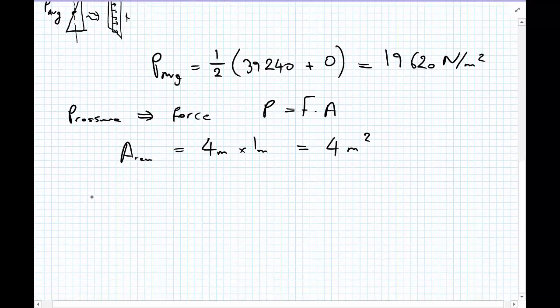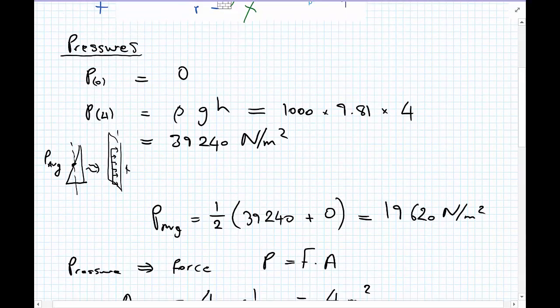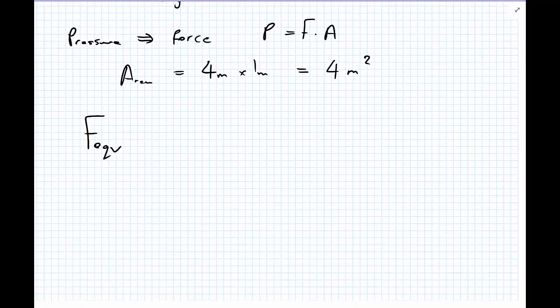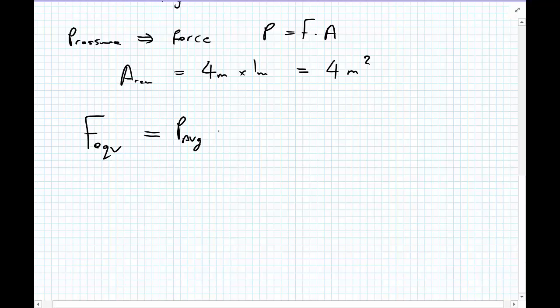So our equivalent force coming from this total height of fluid is equal to the average pressure multiplied by the area over which this average pressure is acting. So that is our 19,620 multiplied by 4 meters squared, is now equal to 78,480 newtons.